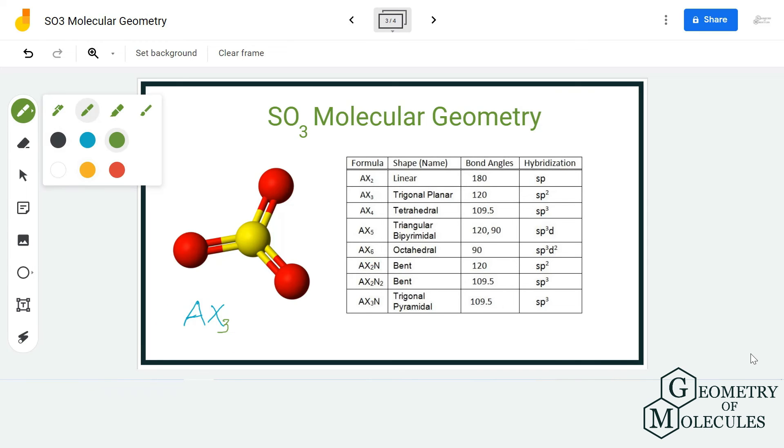If you refer to this table, you can see that if it has AX3 notation, it has trigonal planar molecular geometry. Hence, SO3 has a trigonal planar geometry and the bond angles are 120 degrees.